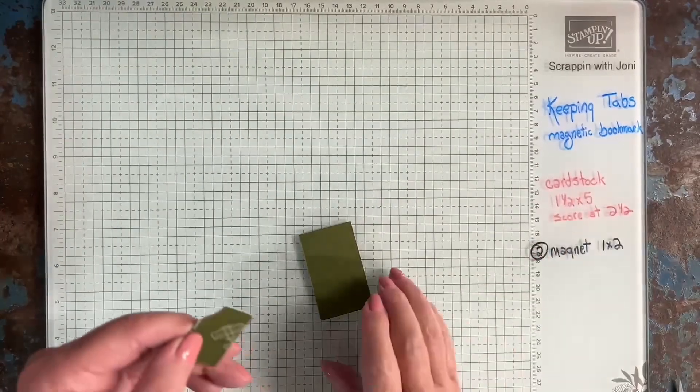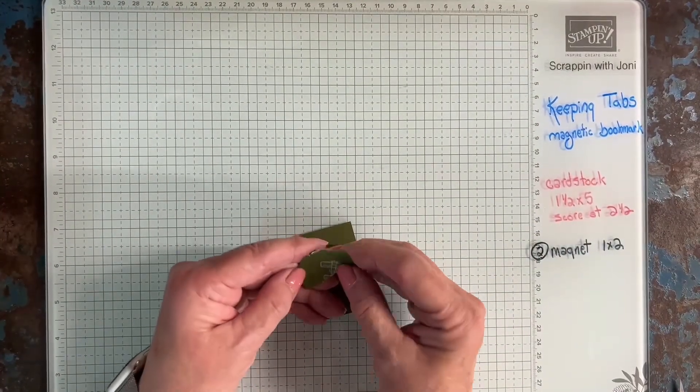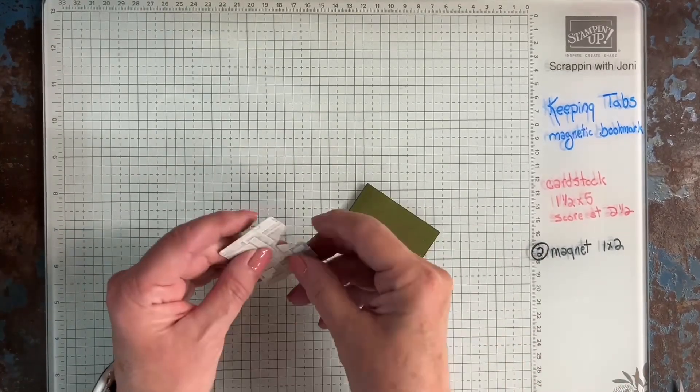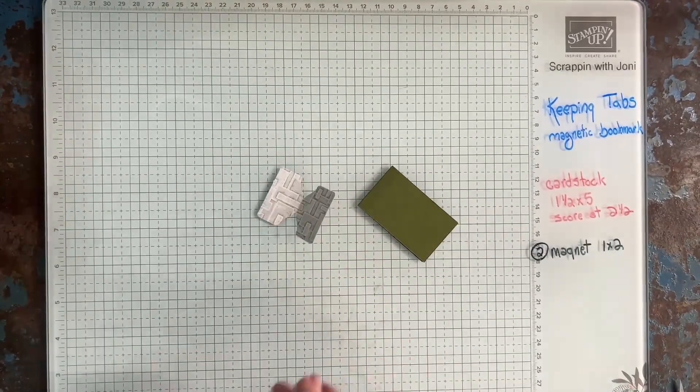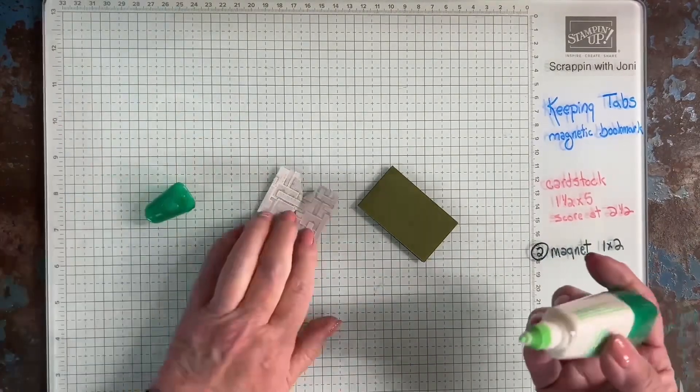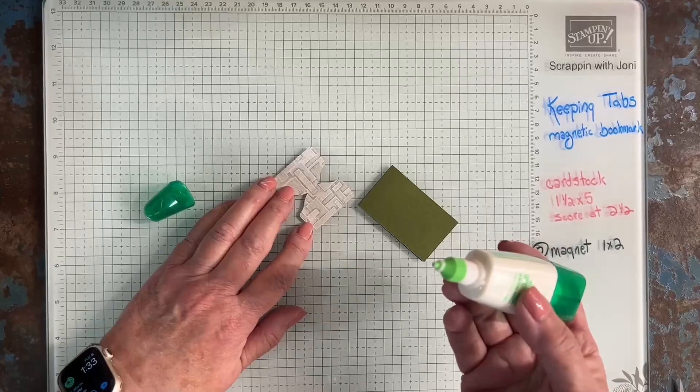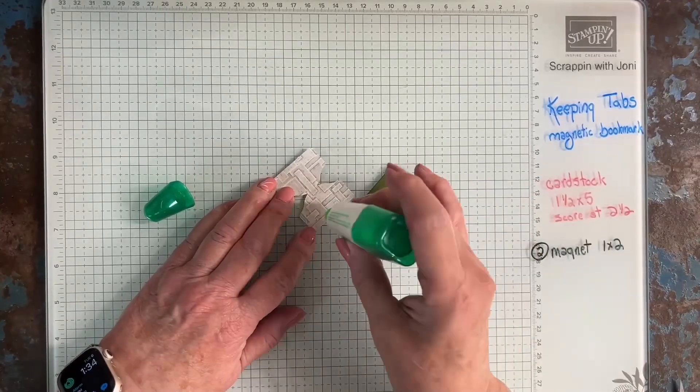This is kind of like the topper. So what we're going to do is just a little bit of glue. I got a little carried away with some of my earlier ones. You don't need a lot. First of all, it's a really strong glue. And second of all, you don't want it going everywhere. If you're not a fan of the glue, you could use a strip of tear and tape.